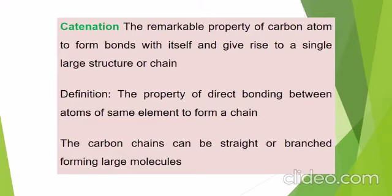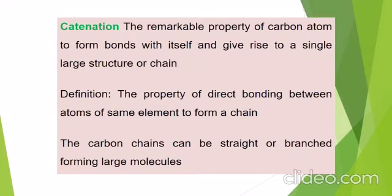Carbon has a very important property called catenation. The remarkable property of a carbon atom to form bonds with itself and give rise to a single large structure or chain. The definition: the property of direct bonding between atoms of the same element to form a chain. The carbon chain can be straight or branched, forming large molecules.